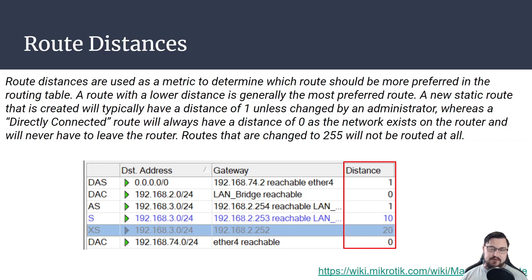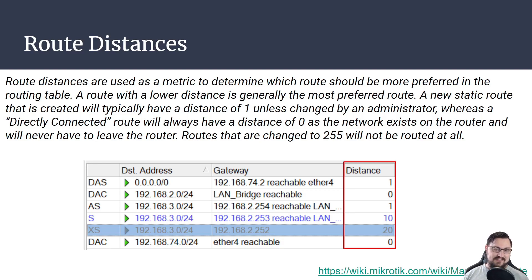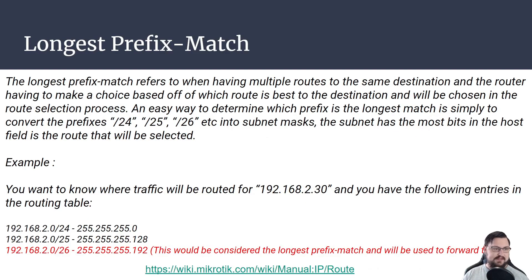Here specifically we want to talk about routing distances. In that table you can see there is the distance column — whatever has the lowest distance is the route that will be considered the best.